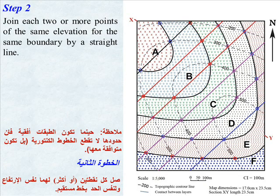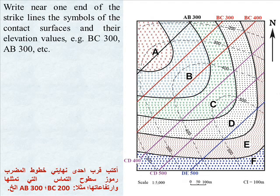Step 2. Join each two or more points of the same elevation for the same boundary by a straight line. Write near one end of the strike lines the symbols of the contact surfaces and their elevation values — for example, BC 300, AB 300, etc.